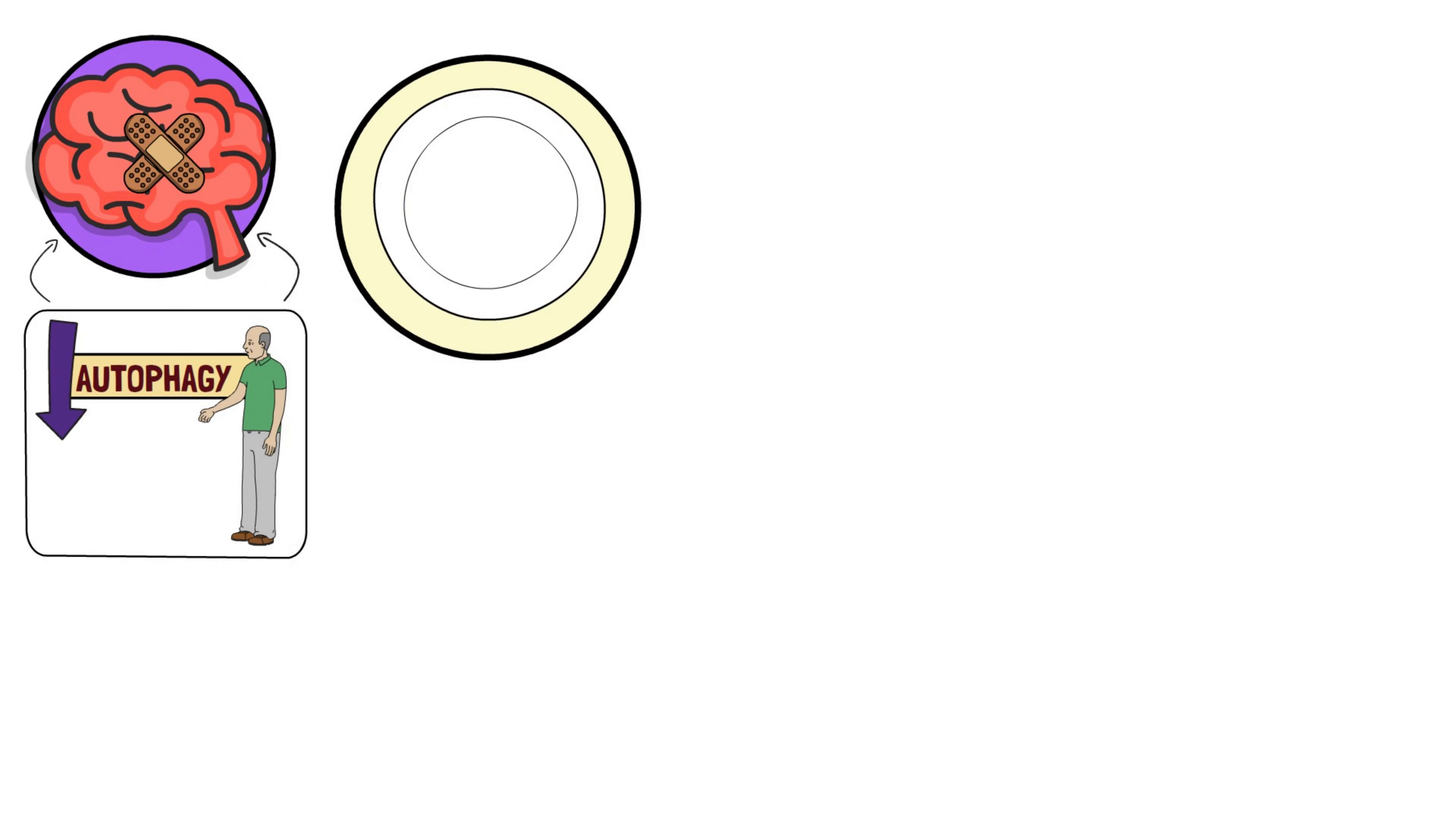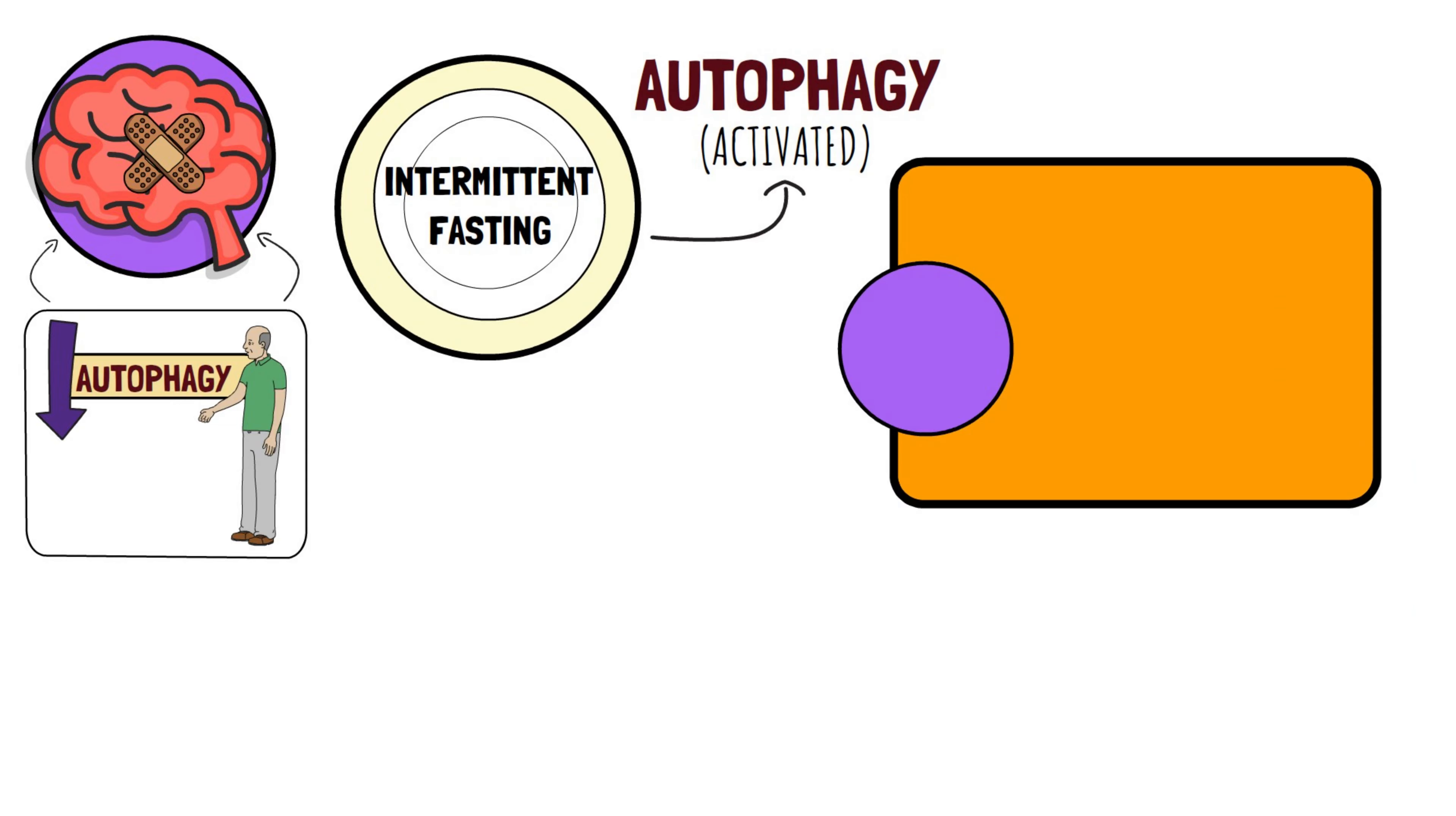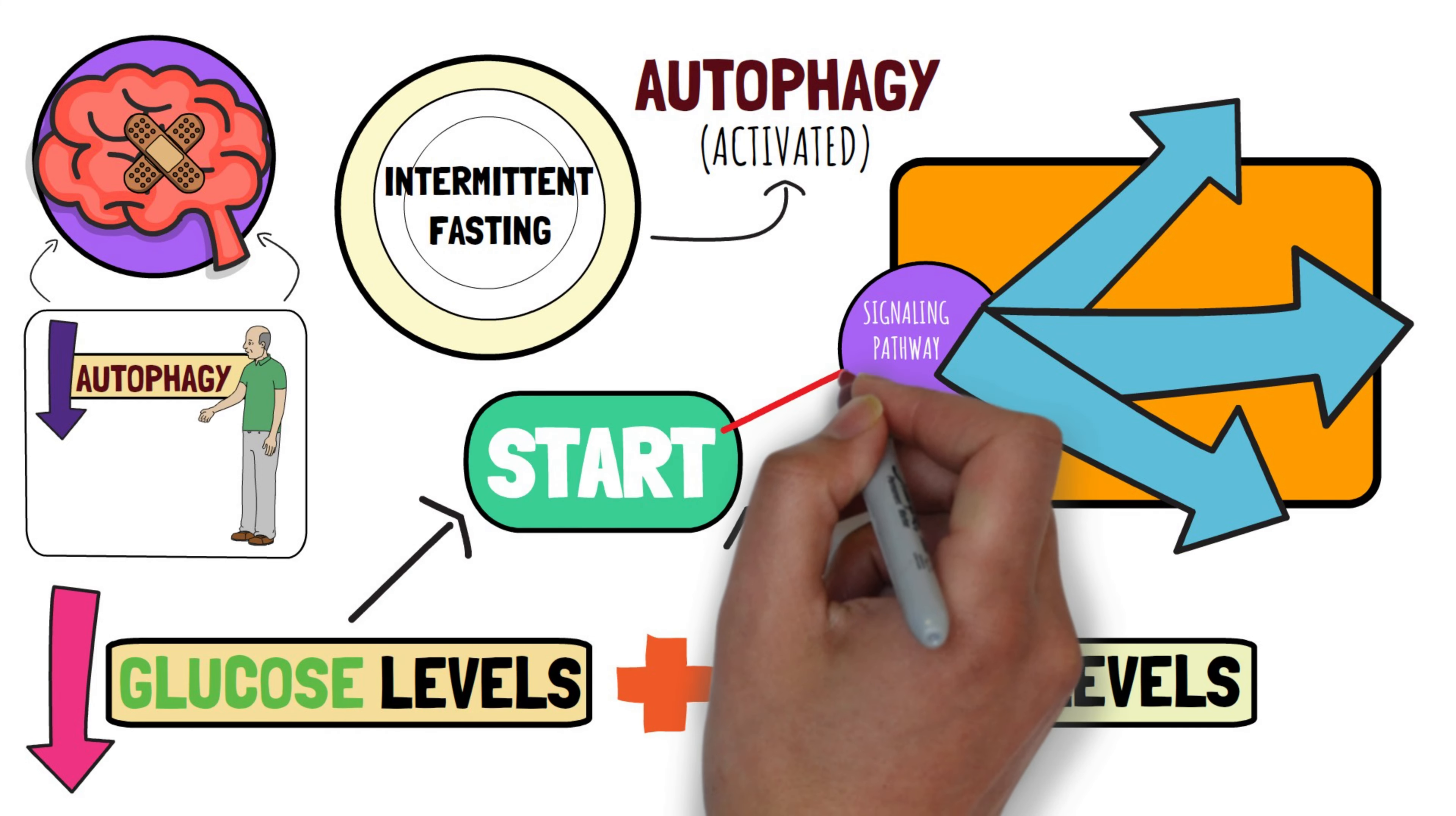Intermittent fasting triggers a process that activates autophagy. It works by signaling pathways and reducing certain activities in cells, but it only kicks in when you have significantly lowered your glucose levels and insulin levels start to drop.